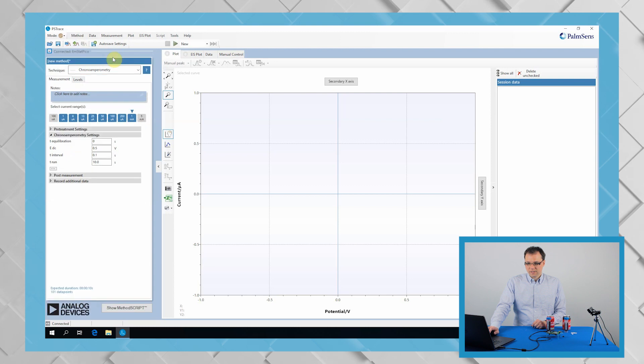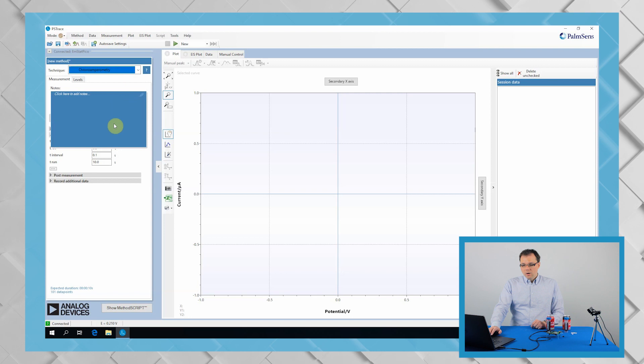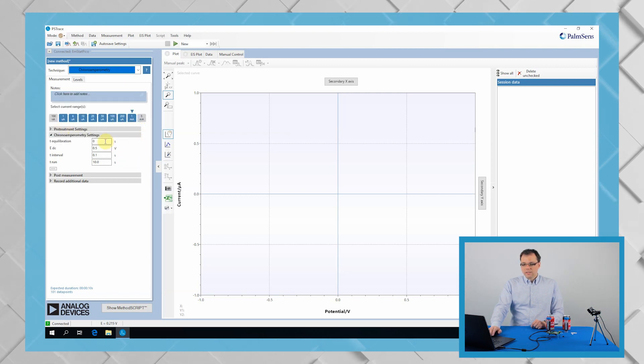First, we're going to make sure that the Amstead Pico appears in the drop-down menu for the connection and then we press the connect button. Once it's connected, we make sure we have chosen the right technique, which is chronoamperimetry. As the name suggests, it means record current over time while applying a constant potential. We have chosen most of the available current ranges. For the auto-ranging of the Amstead Pico to take place, we should give it some time in advance, so we put an equilibration time of 5 seconds. The suggested potential by Zimmer and Peacock to use these electrodes is 0.65 volts or 650 millivolts. We're going to record a value every half second and let this measurement run for 600 seconds.